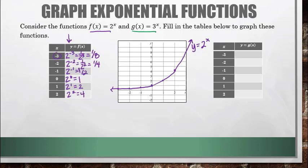Now let's graph g of x, which is 3 to the x power. When x is negative 3, we get 3 to the negative 3, which is 1 over 3 cubed, which is 1 over 27. 3 to the negative 2 is 1 over 3 squared, which is 1/9. 3 to the negative 1 is 1/3. 3 to the 0 is 1. 3 to the 1 is 3, and 3 squared is 9.